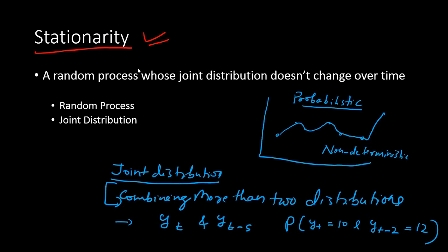There are a couple of terms used in this definition: one is the random process and the other is the joint distribution. What is a random process? Any time series data is considered to be a stochastic process or a random process, because the data points are probabilistic in nature. A random process is probabilistic in nature; there is no certainty about the future data.